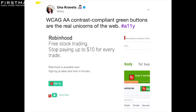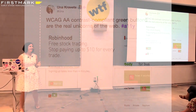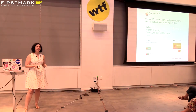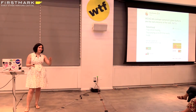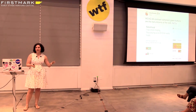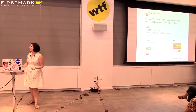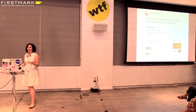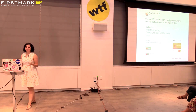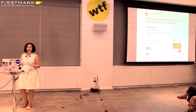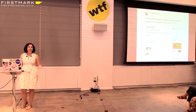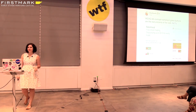Accessible green buttons are the true unicorns of the web. I tried to find good examples — GitHub, ZocDoc, Robinhood — every site that has green. Except for Uber; they had a dark green and they did well. But it's so hard to find these green buttons. It's a big problem and no one's talking about it — the big green button problem.